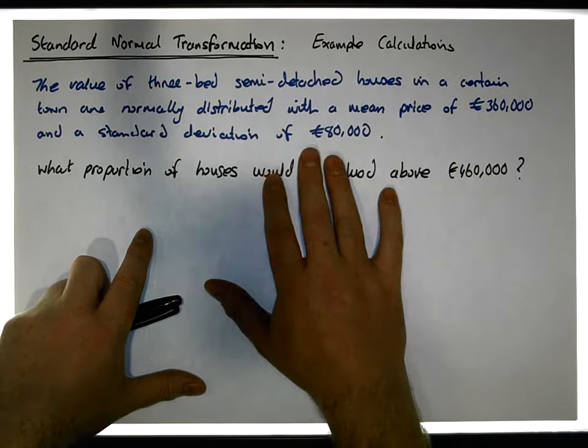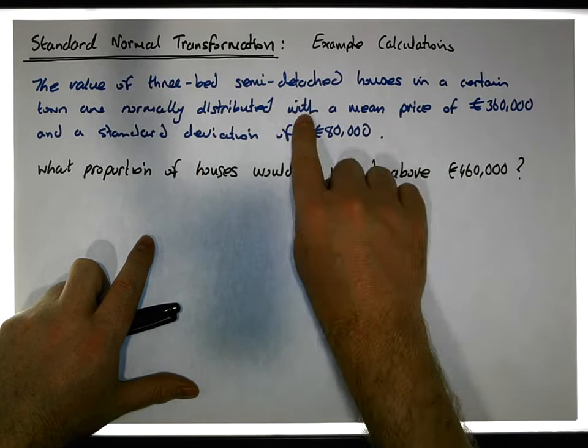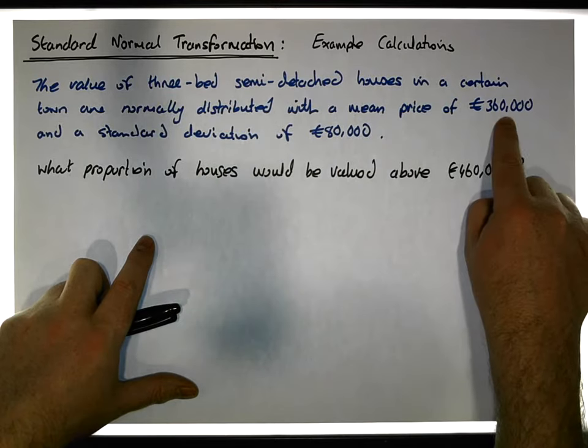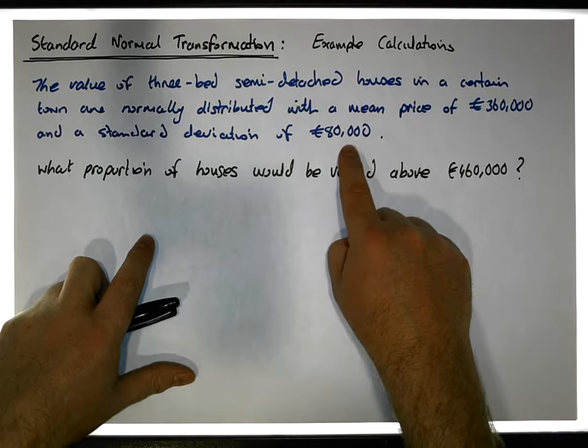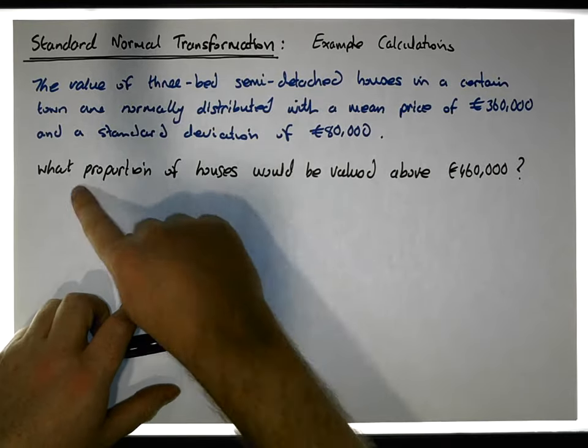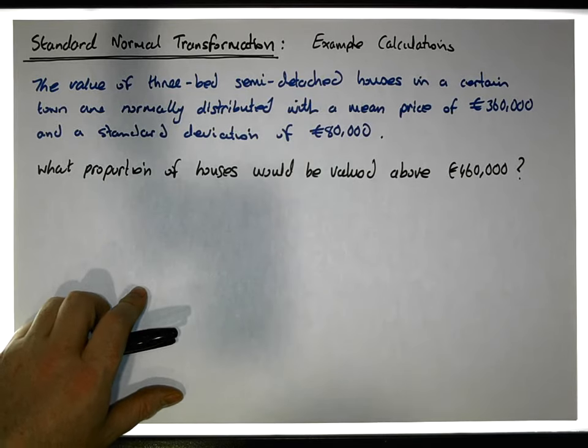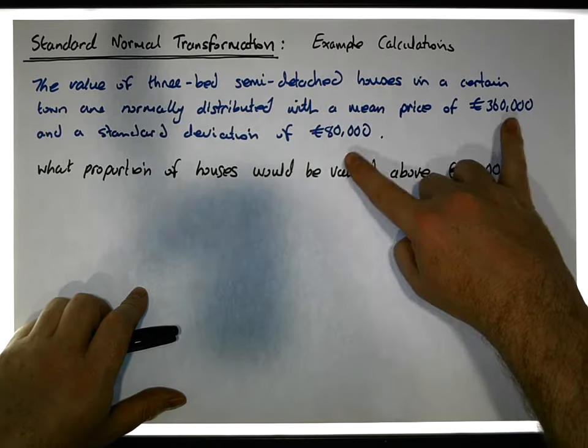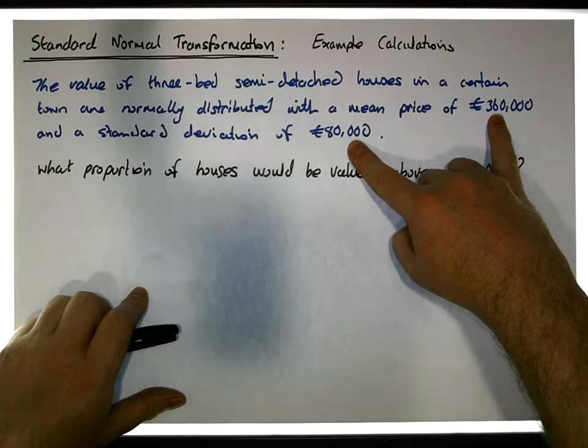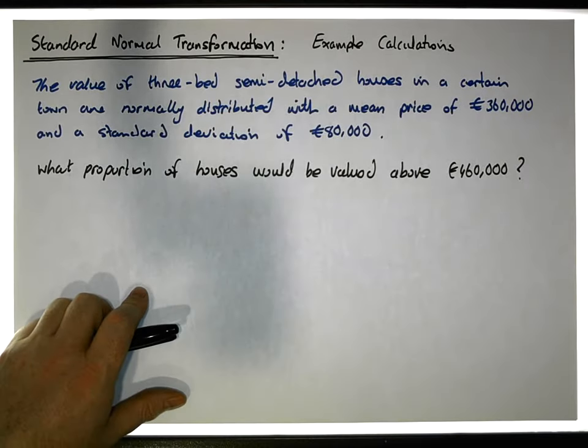We're also told about this population of three-bed semi-detached houses that the mean price is 360,000 euros and the standard deviation is 80,000 euros. The question is asking: what proportion of houses would you expect to be valued above 460,000 euros? Knowing these two pieces of information, can we figure out what proportion of houses would be valued above 460,000 euros?